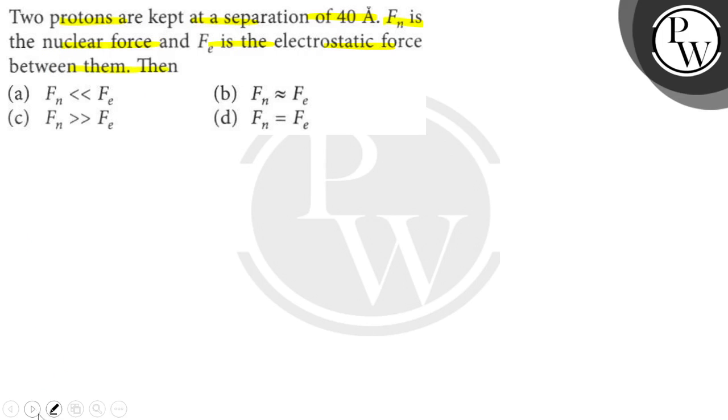Option A: Fn much less than Fe. Option B: Fn equivalent to Fe. Option C: Fn much greater than Fe. Option D: Fn equals Fe.